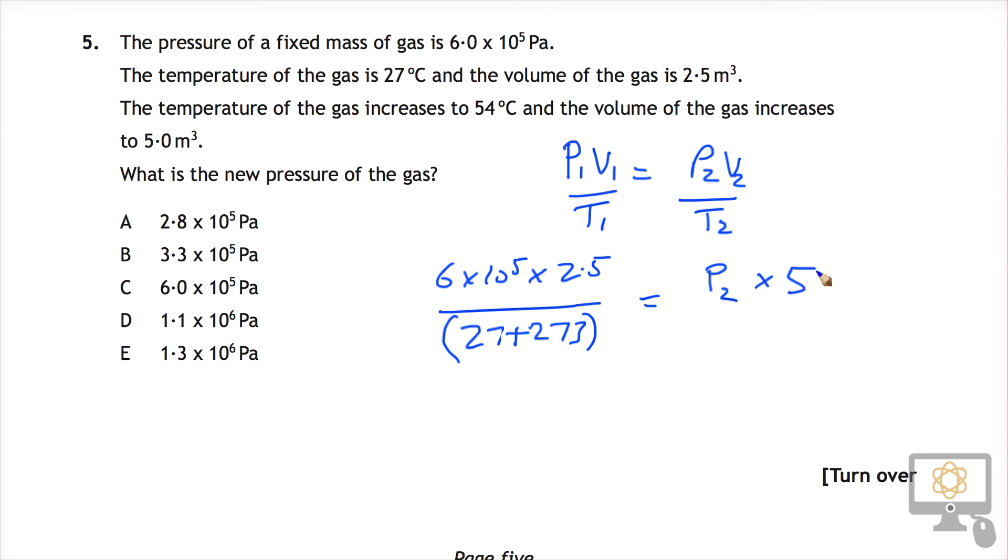Then that equals the new pressure, which is P₂, times the new volume, which is 5, over the new temperature, which is 54 plus 273 Kelvin. So effectively the volume has doubled. The temperature may look like it's doubled, but it hasn't doubled at all because we're dealing with a Kelvin scale of temperature.